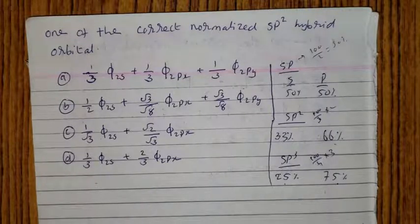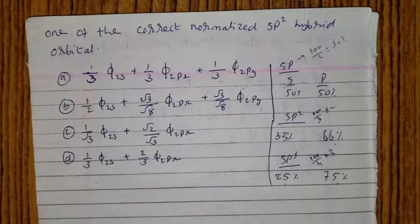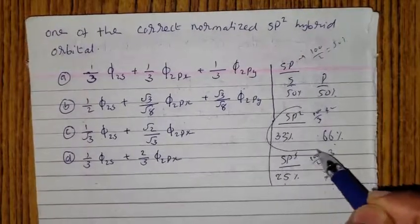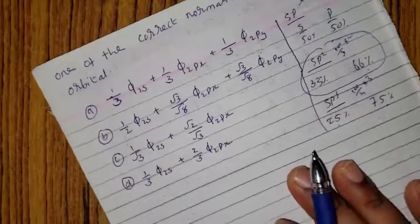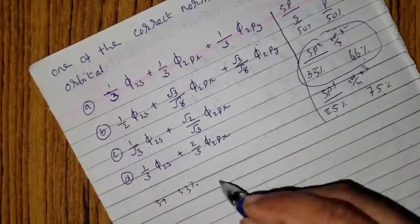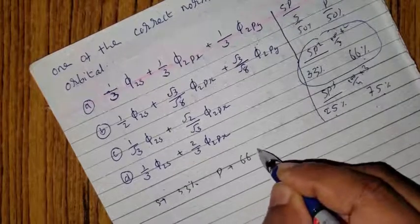If we get this method, we are able to write it. S character 33 percentage, P character 66%.